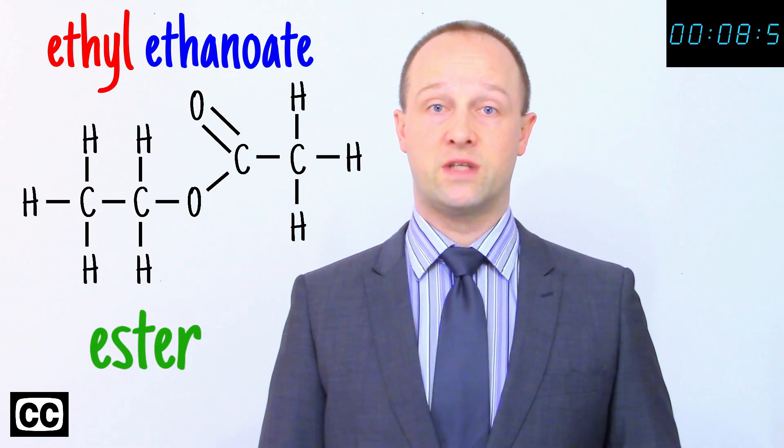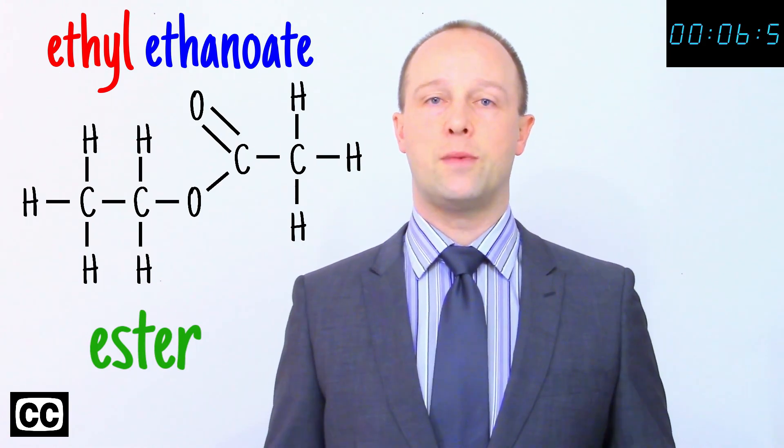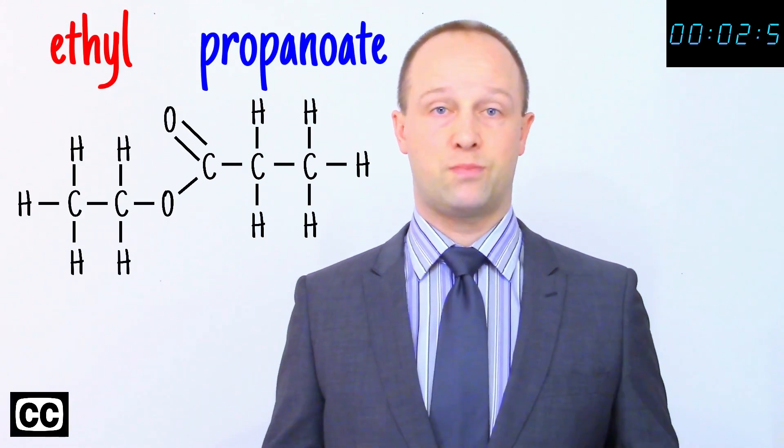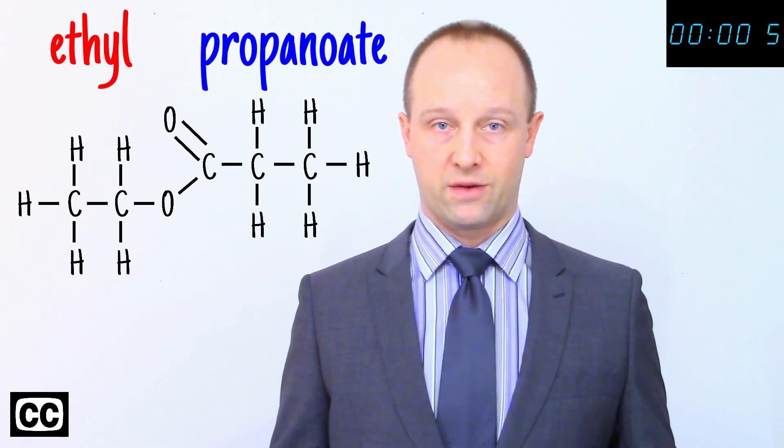The number of alcohol carbon atoms gives us the first part of the name, and the number of carboxylic acid carbon atoms gives us the second part of the name. For example, ethanol plus propanoic acid gives ethyl propanoate.